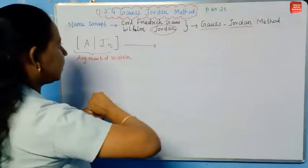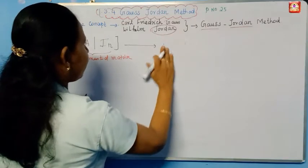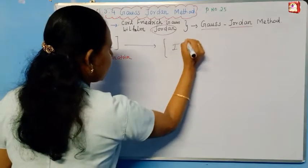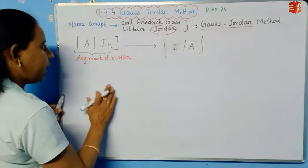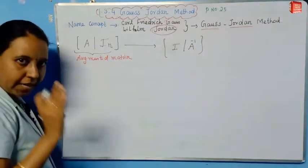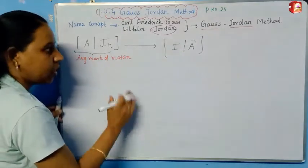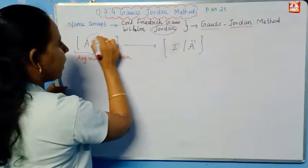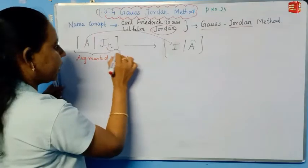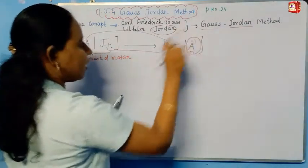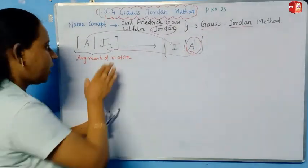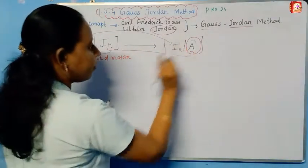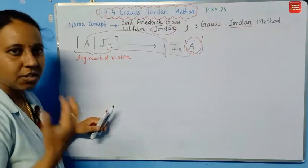How do you convert this? We convert A into the identity matrix, and I into A inverse. Meaning, if you do elementary row operations on the augmented matrix, the given matrix A will convert to the identity matrix, and simultaneously the identity matrix I will convert to A inverse. This is the Gauss-Jordan Method.